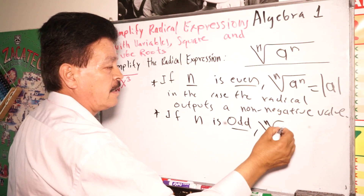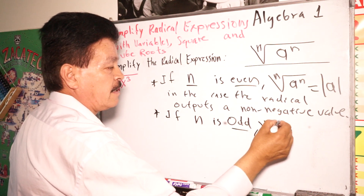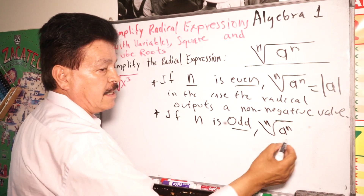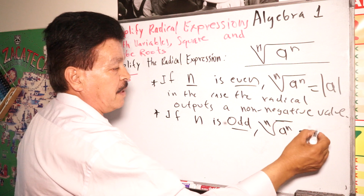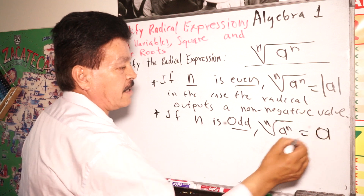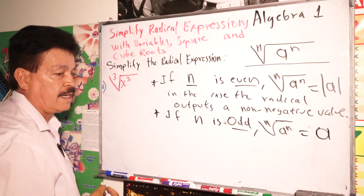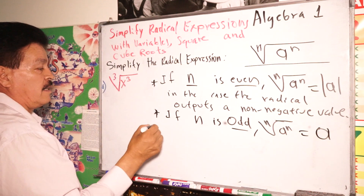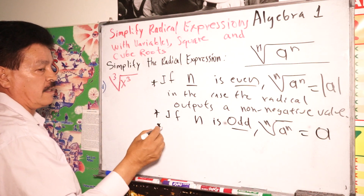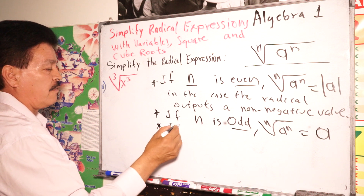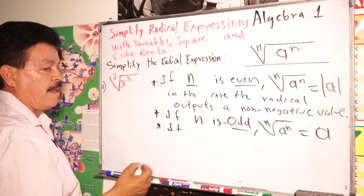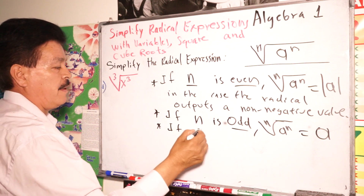Then, if N is odd, this will equal A — without the absolute value. That is the second important concept.